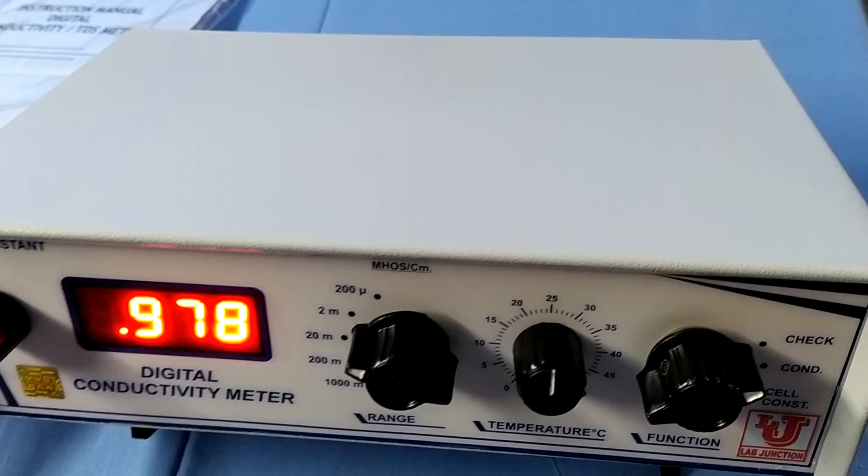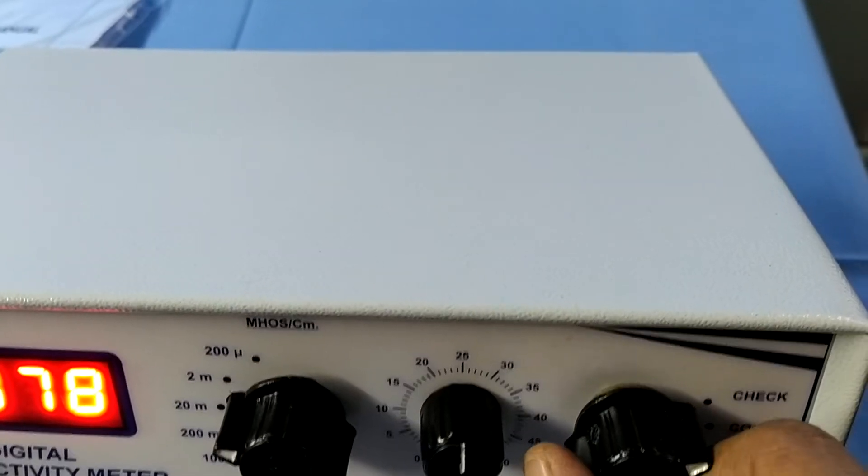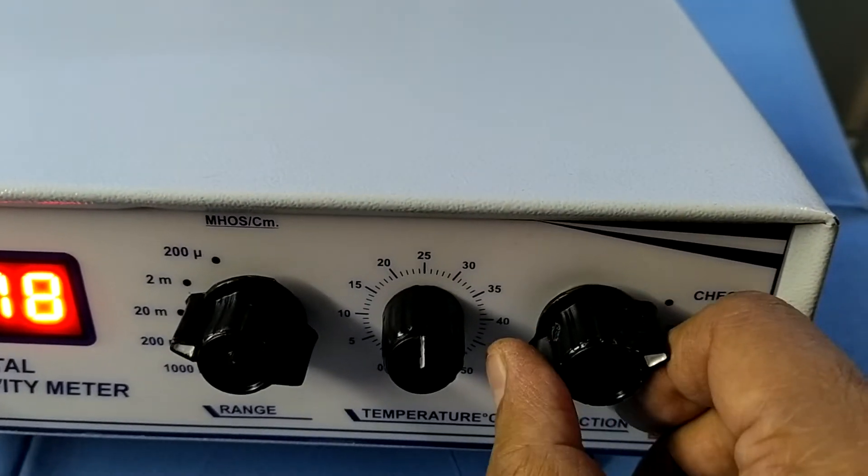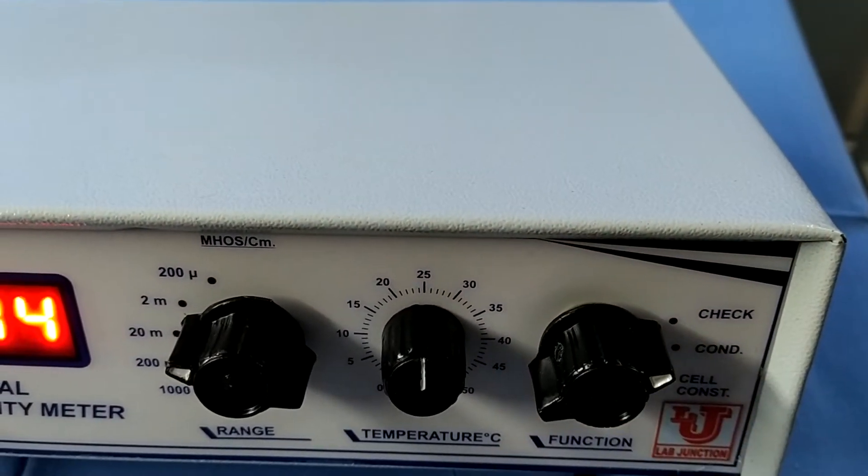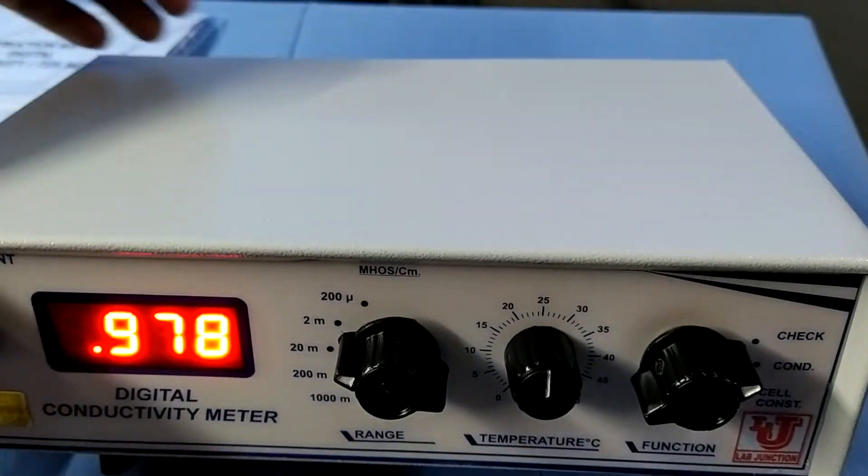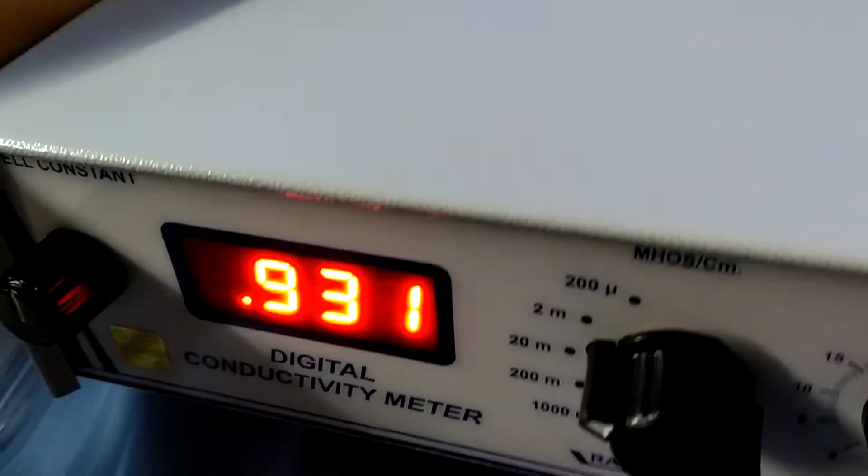Now, first you have to do function control on check position like this. Check position. Now, on the back side, one Cal knob is there, you have to set like this. You have to set 1.000.